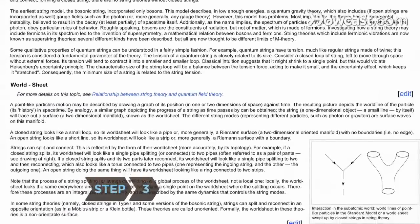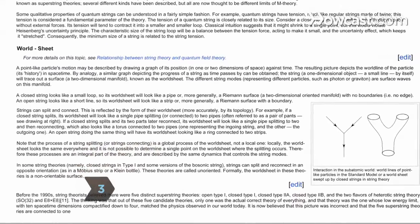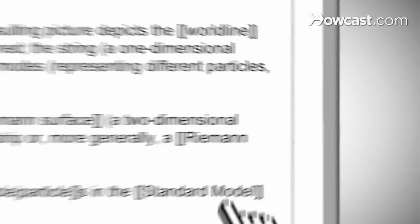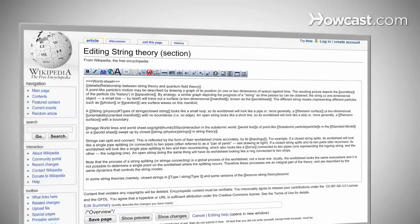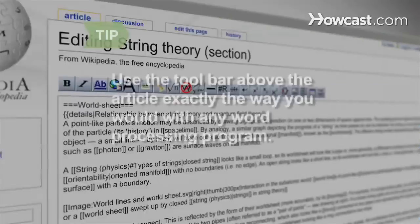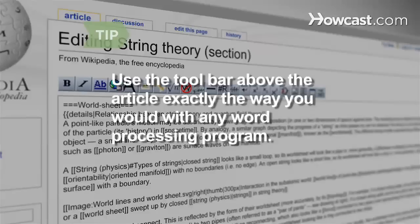Step 3. If you're making just a small change in one part of the article, look for the Edit link on the right side of each section and click on the one next to the passage you want to revise. This allows you to make changes in one section without opening the whole article. Use the toolbar above the way you would with any word processing program. Don't worry about strange punctuation marks that might appear. This is just Wikipedia formatting your copy.